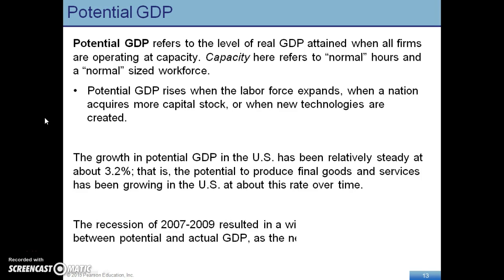We always look at potential GDP, which refers to the level of real GDP that is obtained when all firms are operating at capacity. Capacity means normal work hours and workforce. The potential is where our economy should be striving for. The growth in potential GDP has been about two to three percent, and GDP is a good indicator of how our economy is doing.